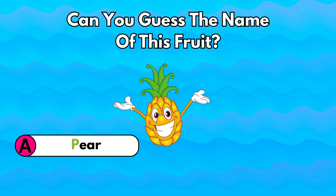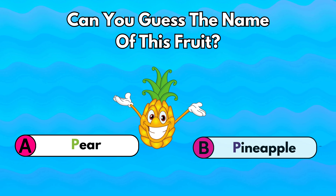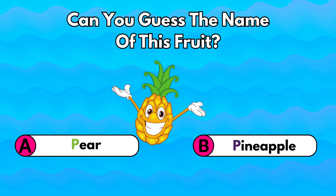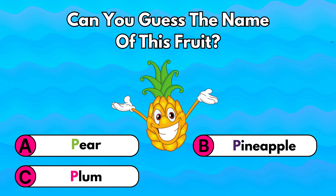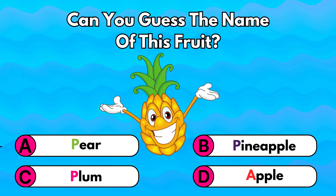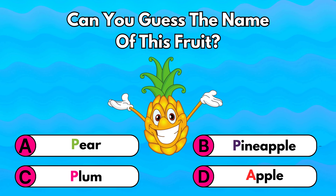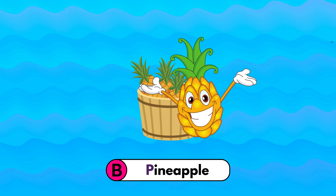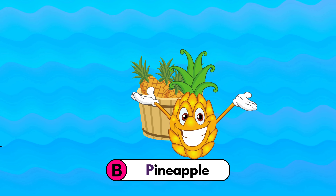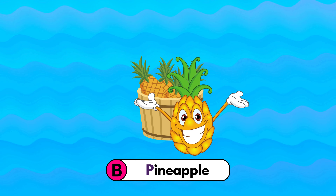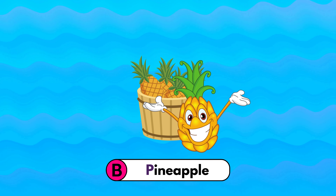Can you guess the name of this fruit? Is it A pear, B pineapple, C plum, or D apple? That's right, it's B pineapple! Great job!